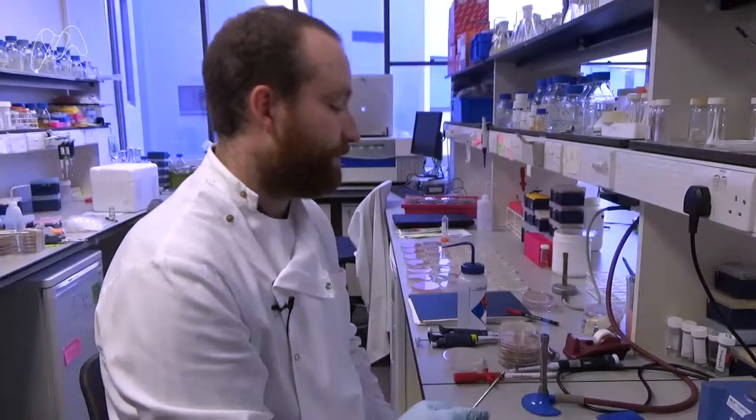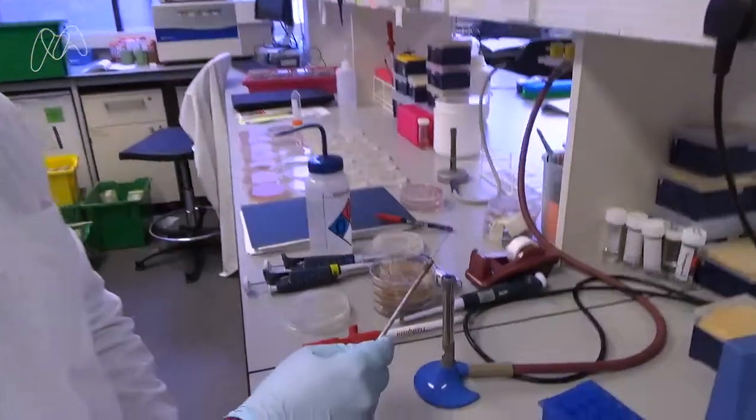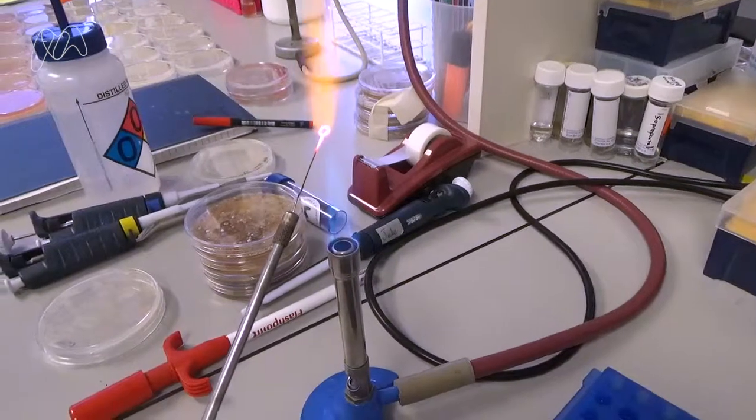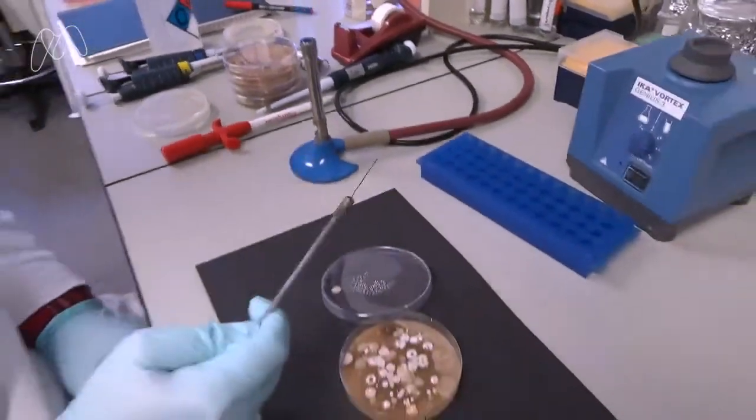This is what we use for that. This is a sterile loop that we heat up in the Bunsen burner to be sure that there's no bacteria already on there.